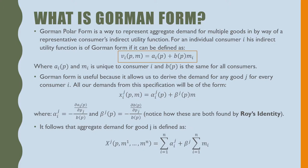Gorman Form is useful because it allows us to derive the demand for any good J for every consumer I. All our demands from this specification will be of the form X(p,m) for consumer I and good J, equal to alpha(p) + beta times income m, where alpha and beta are both derived using Roy's identity.